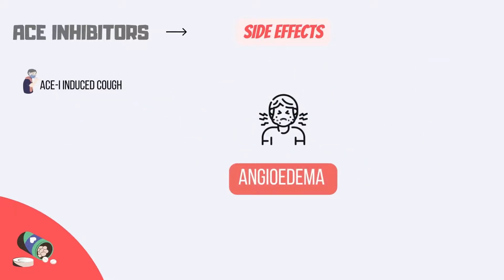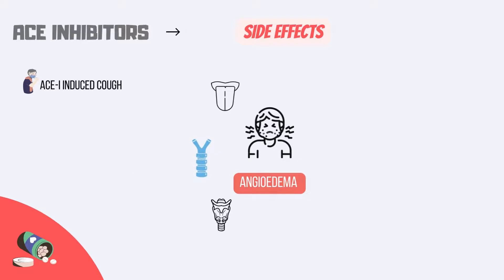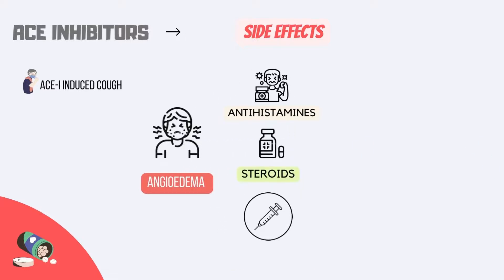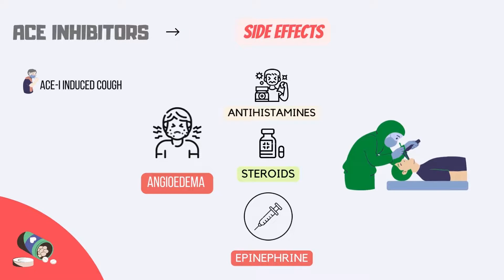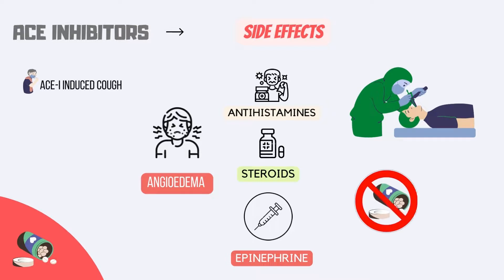The most serious side effect of ACE inhibitors is angioedema. It can affect any organ in the body, including the gut, but edema of the tongue, glottis, and/or larynx, which causes airway obstruction, is the most worrisome. Antihistamines, steroids, and epinephrine are among the available treatment options. In severe situations of airway compromise, endotracheal intubation is also an option. Because there is a relatively significant risk of recurrence, patients who have previously had ACEI-induced angioedema should not be retested with this class of medications.